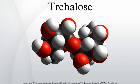Trehalose is nutritionally equivalent to glucose, because it is rapidly broken down into glucose by the enzyme trehalase, which is present in the brush border of the intestinal mucosa of omnivores and herbivores. Trehalase deficiency is unusual in humans, except in the Greenlandic Inuit, where it occurs in 10%–15% of the population. Trehalose has about 45% the sweetness of sucrose at concentrations above 22%, but when the concentration is reduced, its sweetness decreases more quickly than that of sucrose.